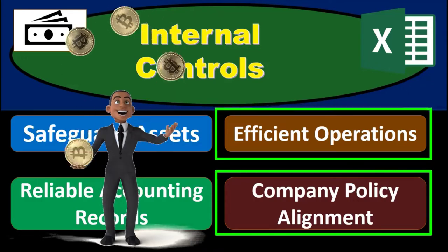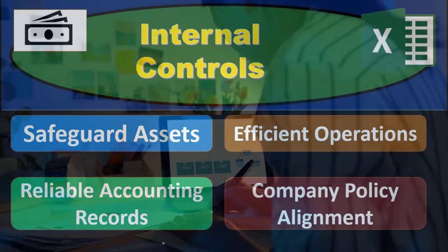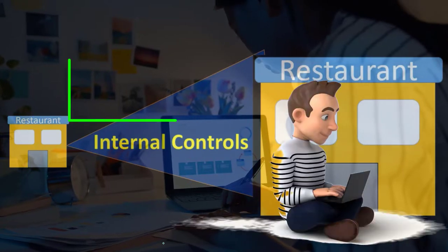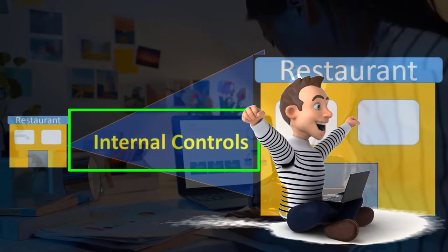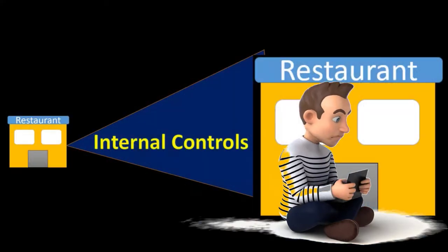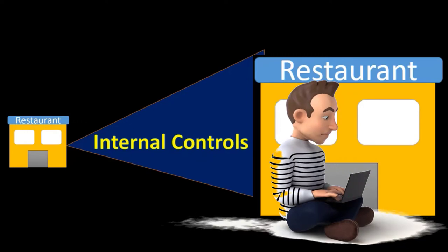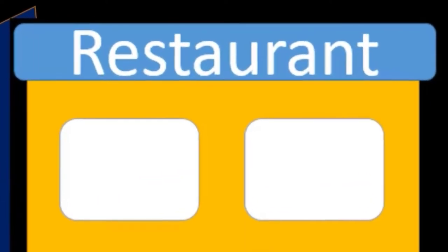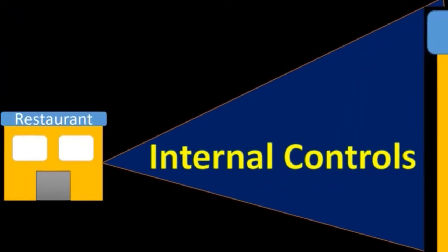We'll get further into what each of these categories means in detail. First, we want to discuss the fact that internal controls will change from organization to organization and industry to industry. We'll have similar objectives, but the customization of the internal controls will differ in order to have an optimal amount depending on size of company and type of industry.